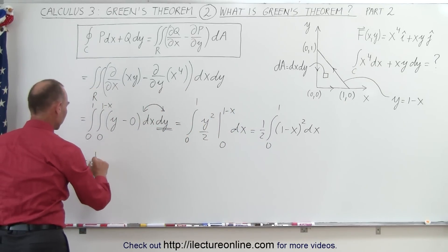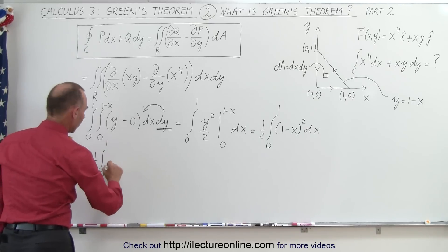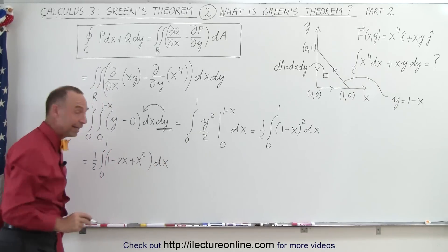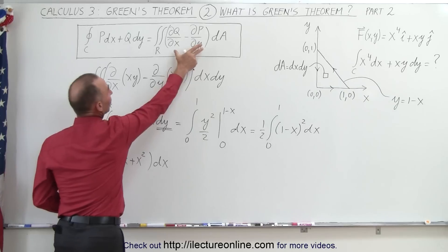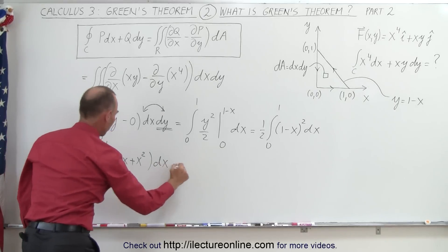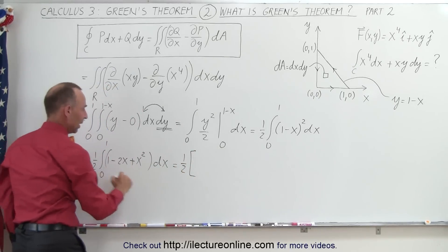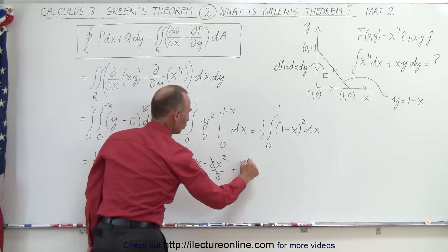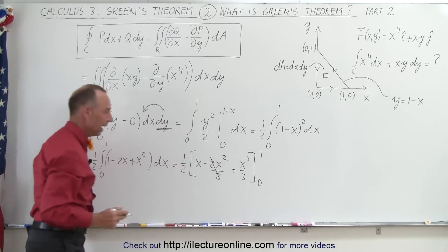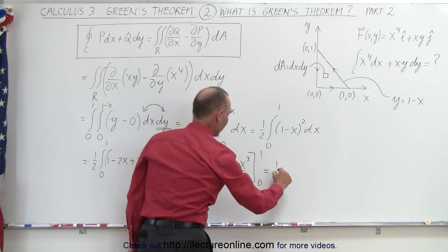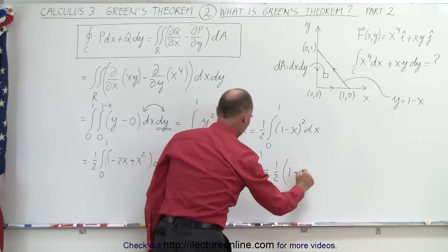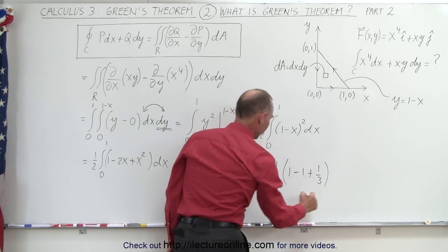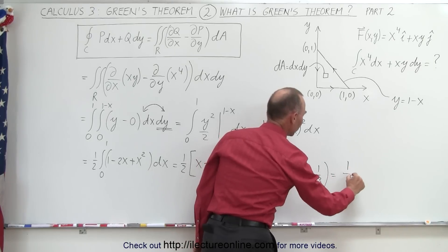We can multiply that out: this equals one-half times the integral from 0 to 1 of 1 minus 2x plus x squared dx. These are not very difficult to integrate — most of the time this is much easier than doing the line integral itself. This equals one-half times x minus x squared plus x cubed over 3, evaluated from 0 to 1. Plugging in the lower limit gives nothing; plugging in the upper limit gives one-half times (1 minus 1 plus one-third).